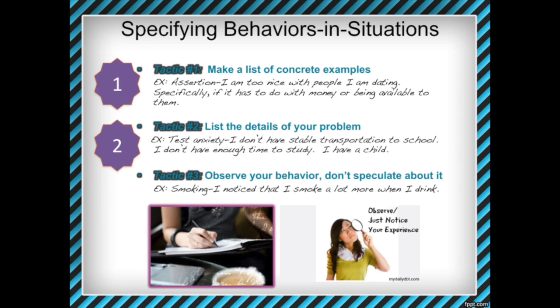The first thing we're going to talk about is that when we look at our behavior — especially the one we want to change — we need to consider it in context. What situations do I do my bad behavior in? The first lecture activity is to give me a list of concrete examples of times you've done your bad behavior. Think of as many recent examples as you possibly can — I'm asking you to come up with five.